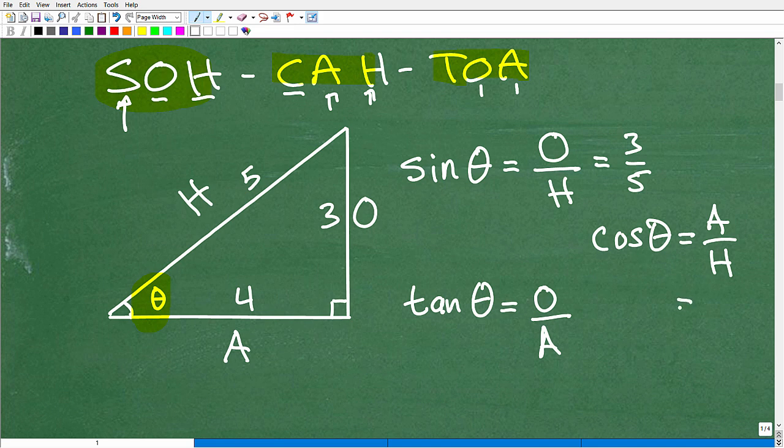The cosine would be four-fifths, and the tangent would be the opposite over the adjacent, three-fourths.